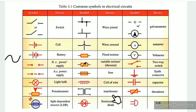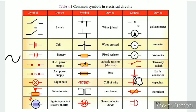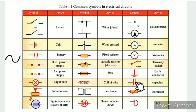Further symbols include: transformer; semiconductor diode; galvanometer (G); ammeter (A); voltmeter (V); two-way switch; capacitor; cell; and thermistor. The bell also has its own symbol.